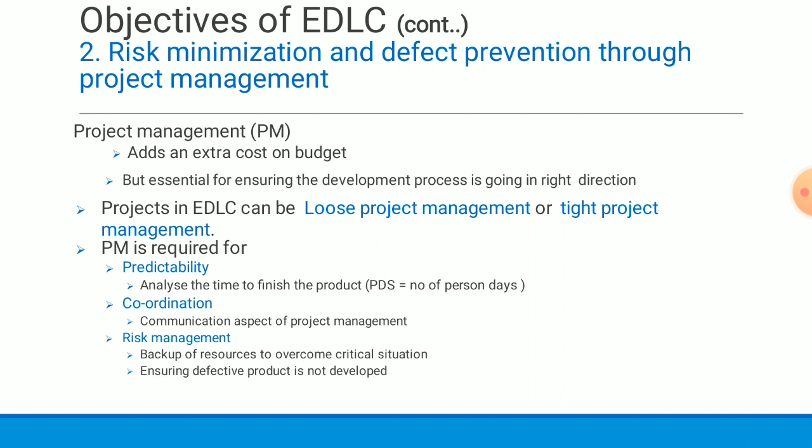The second aspect is coordination — the communication aspect of project management dealing with interaction among partners, suppliers, and clients from whom the product development request originates. The third aspect is risk management, which deals with backup of resources to overcome critical situations and ensuring defective products are not developed.